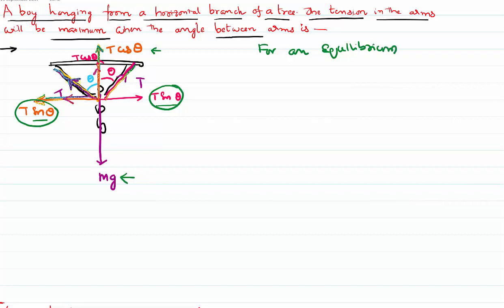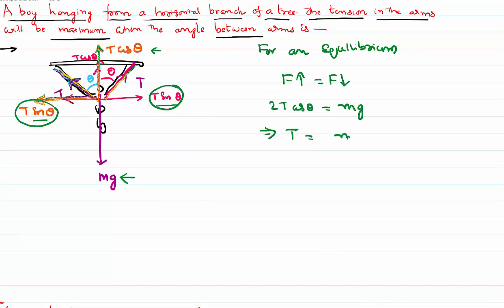For equilibrium, the effective upward force must equal the effective downward force. The upward force is 2T cosθ and the downward force is the weight mg. Therefore we can write the equation for tension as T = mg / (2 cosθ).